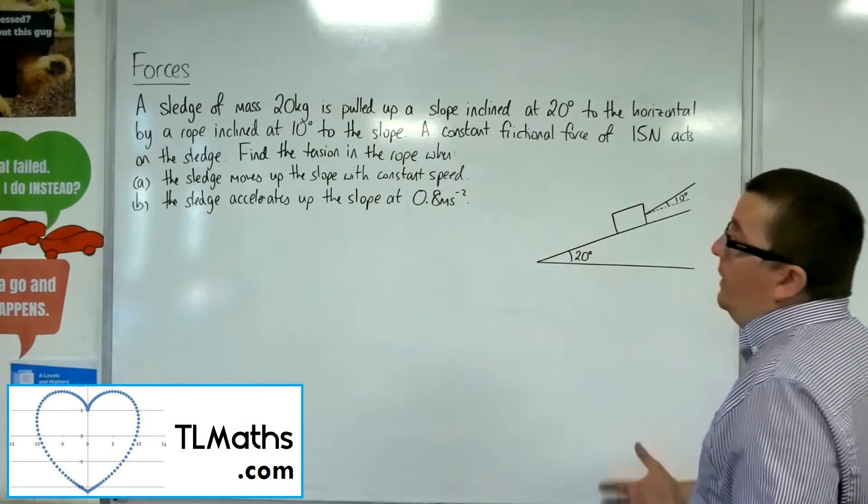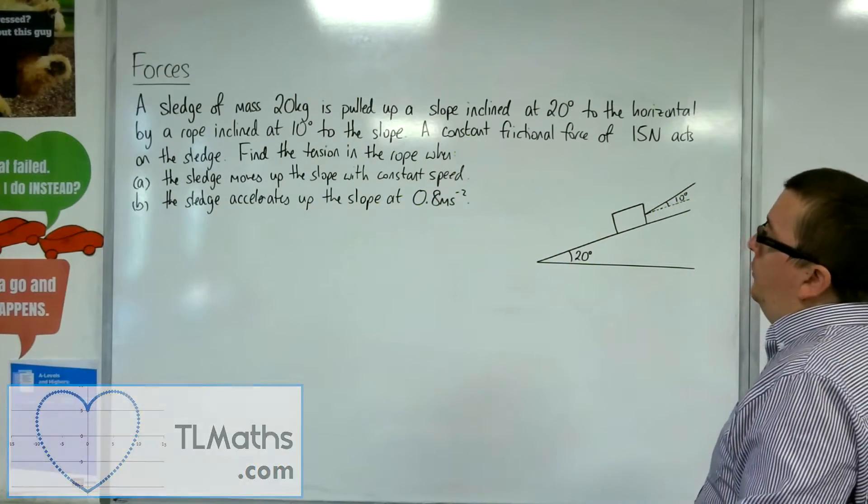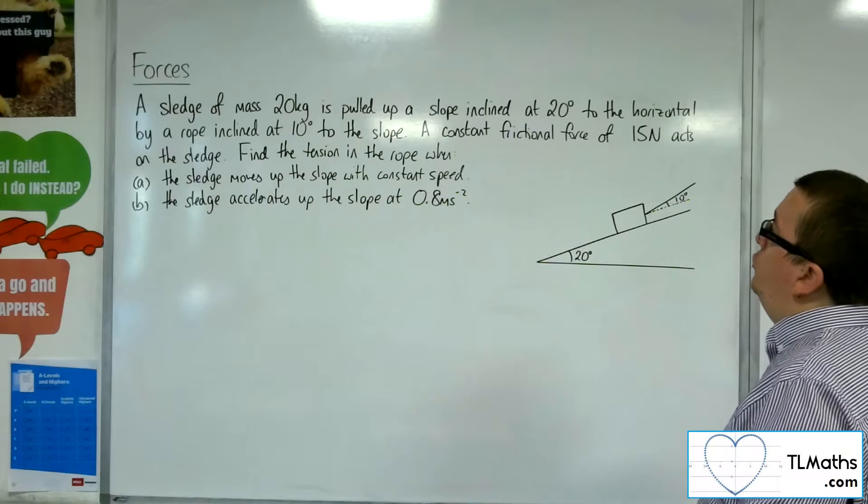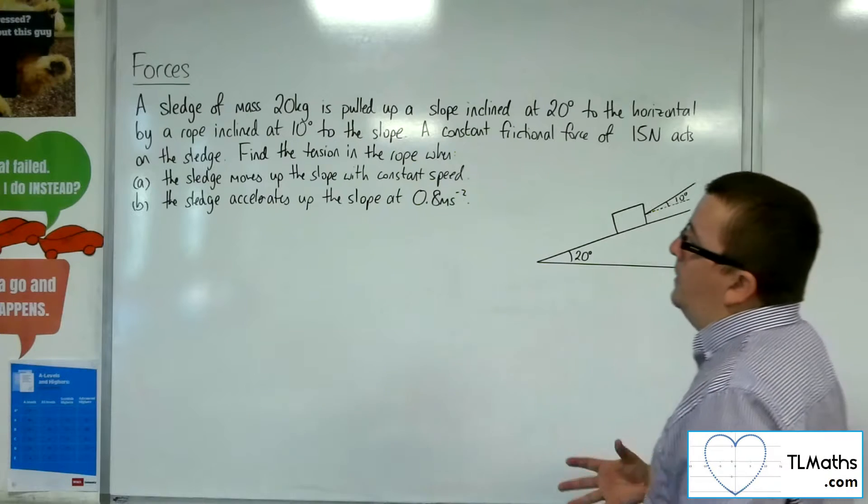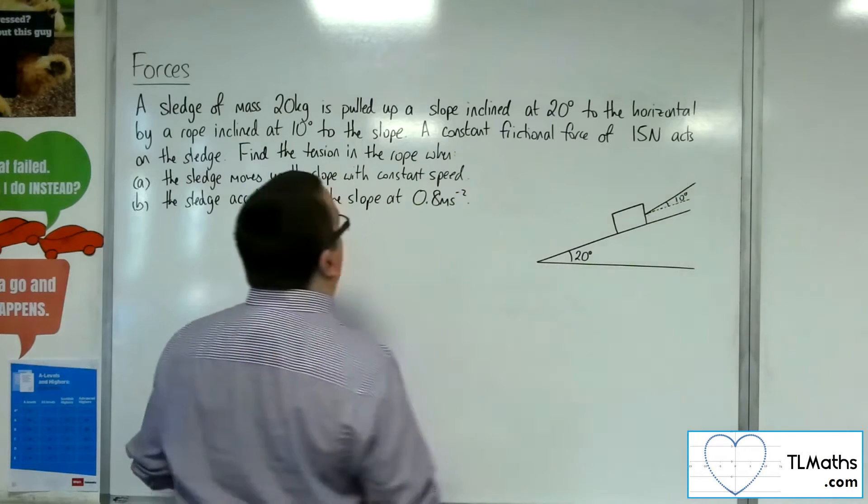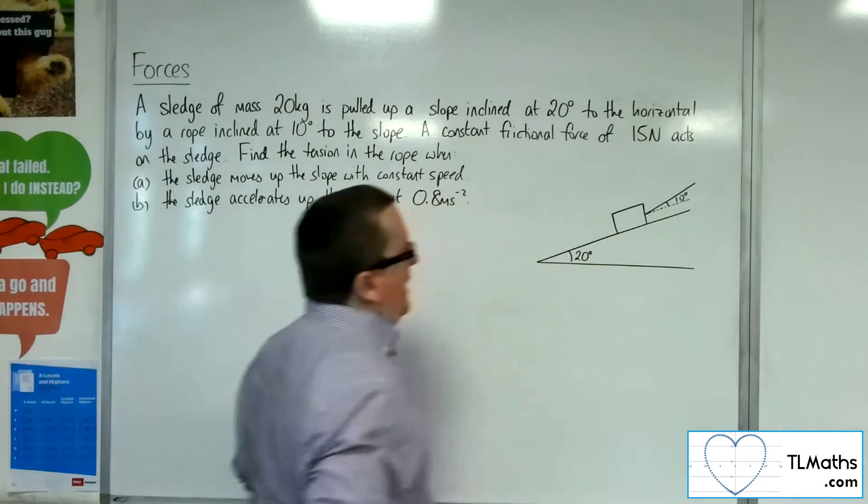Okay, so in this problem, we've got a sledge of mass 20 kilos is pulled up a slope inclined at 20 degrees to the horizontal by a rope inclined at 10 degrees to the slope. So that's the situation that we have.